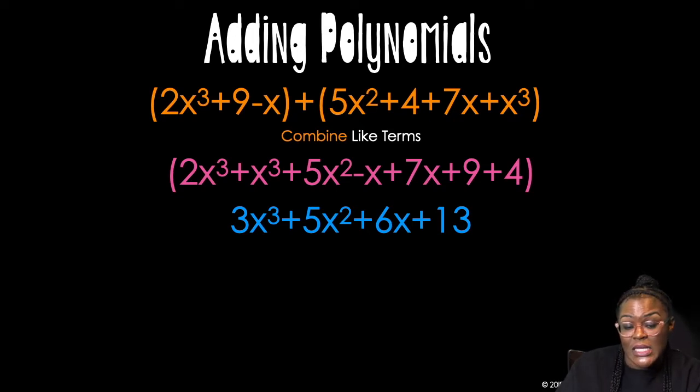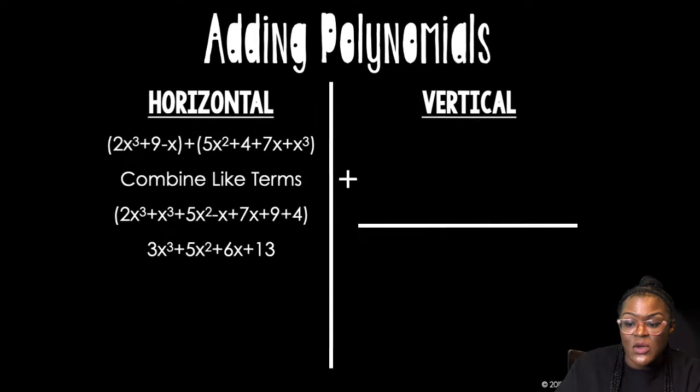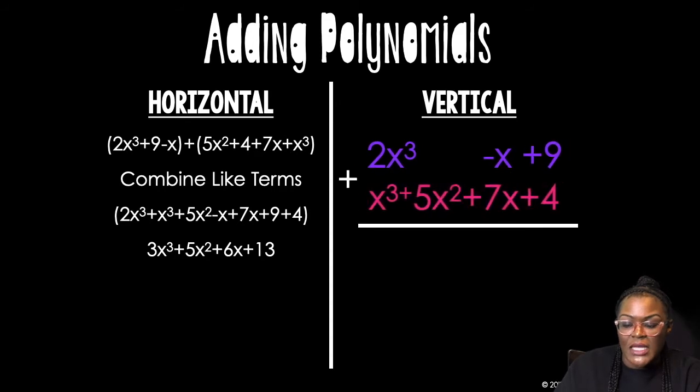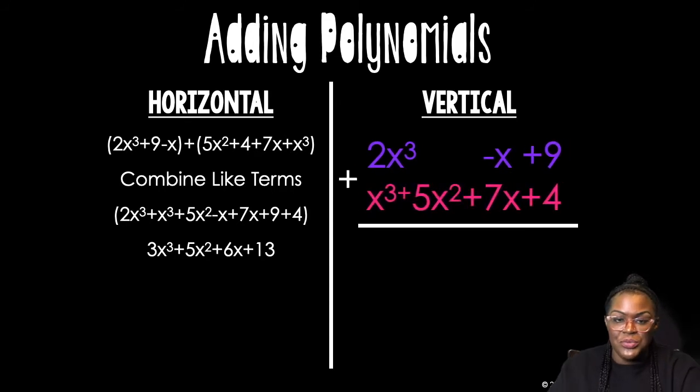If you would like, this is optional, not mandatory. You can also add them vertically, whatever feels more comfortable to you. So we did it horizontal. And then vertical is if you stack them like elementary school. You line them up, degrees over degrees. Cubes over cubes, squares over squares, linears over linears, and then constants over constants. Then you would go ahead and add down.